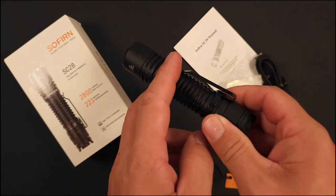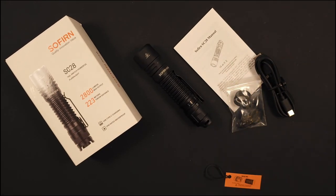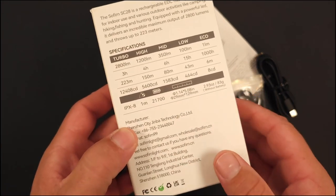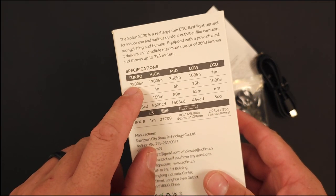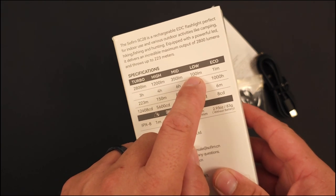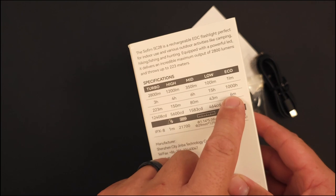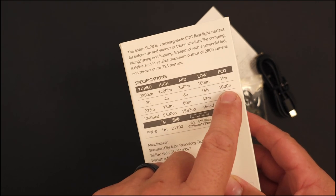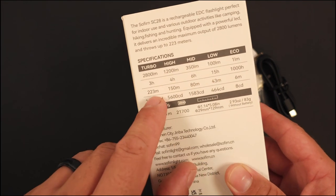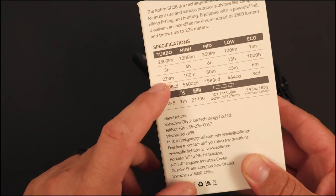Before we get into the specs, here's the box. It has 2800 lumens, 1200 lumens on high, 350 on medium, 100 on low, and a one lumen eco mode. Look at that - 1000 hours in that one lumen eco mode, that's pretty good. With turbo you'll get up to 223 meters and a runtime of three hours.